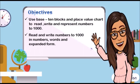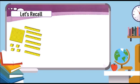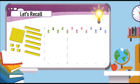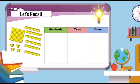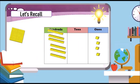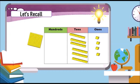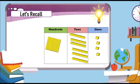In numbers, words, and expanded form, let's recall. How do you use a place value chart to show this set of base 10 blocks? We need to put the base 10 blocks in the ones column, tens column, and hundreds column. Let's discuss.